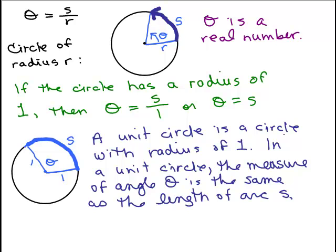If you have a unit circle with a radius of 1, then the measure of angle theta is actually the same thing as the length of S. If you took a string and measured this exactly, that is what we would call the measure of that angle theta as well.